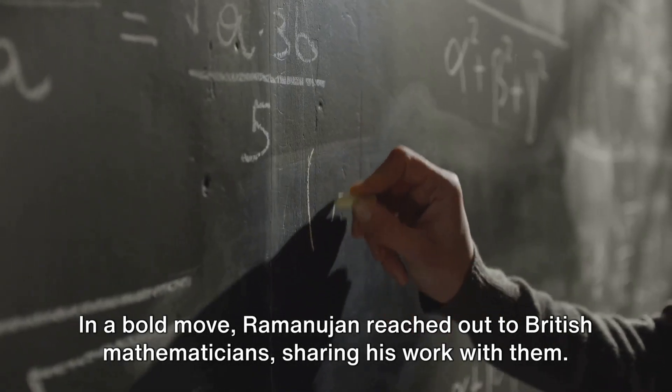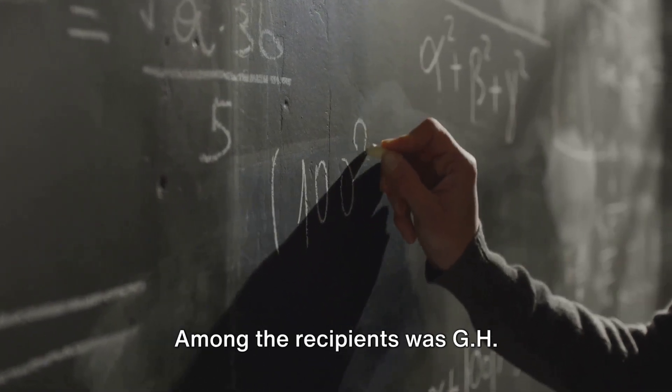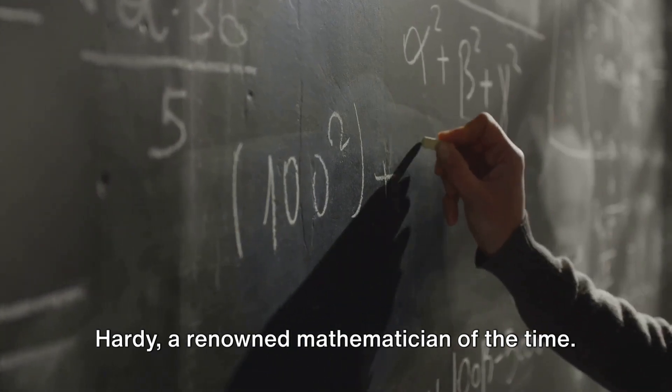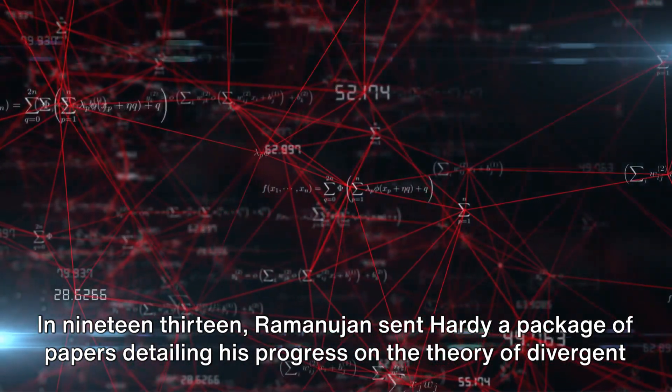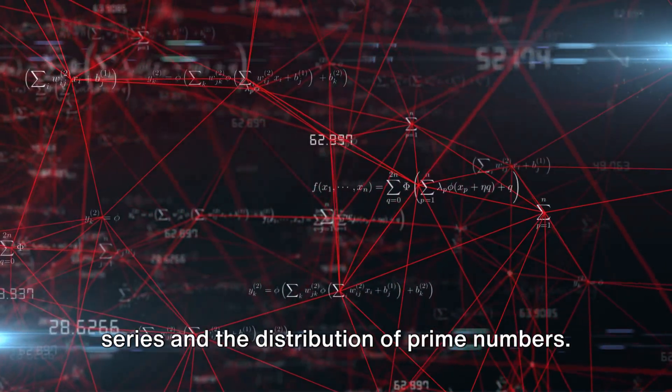Ramanujan reached out to British mathematicians, sharing his work with them. Among the recipients was G.H. Hardy, a renowned mathematician of the time. In 1913, Ramanujan sent Hardy a package of papers detailing his progress on the theory of divergent series and the distribution of prime numbers.